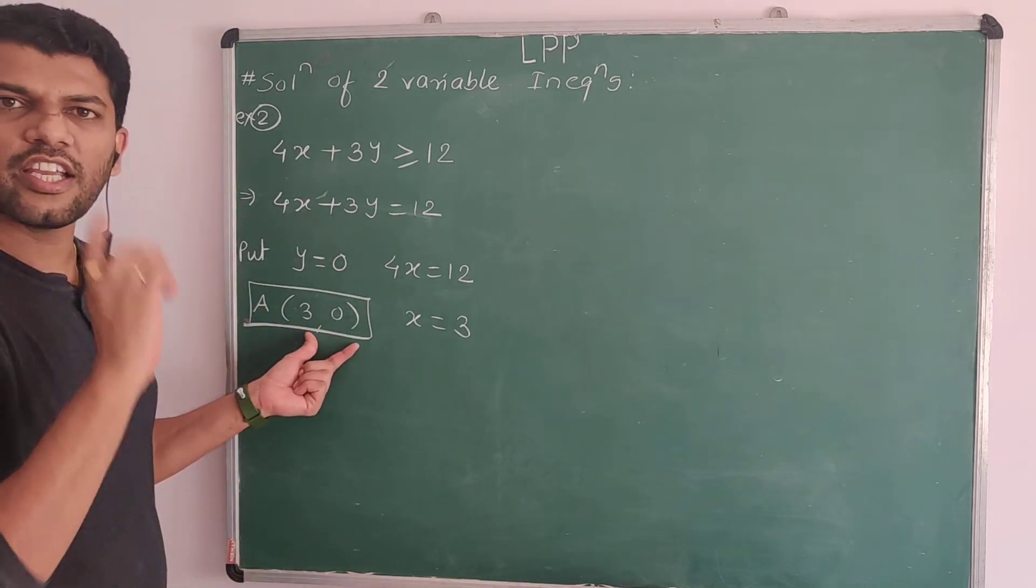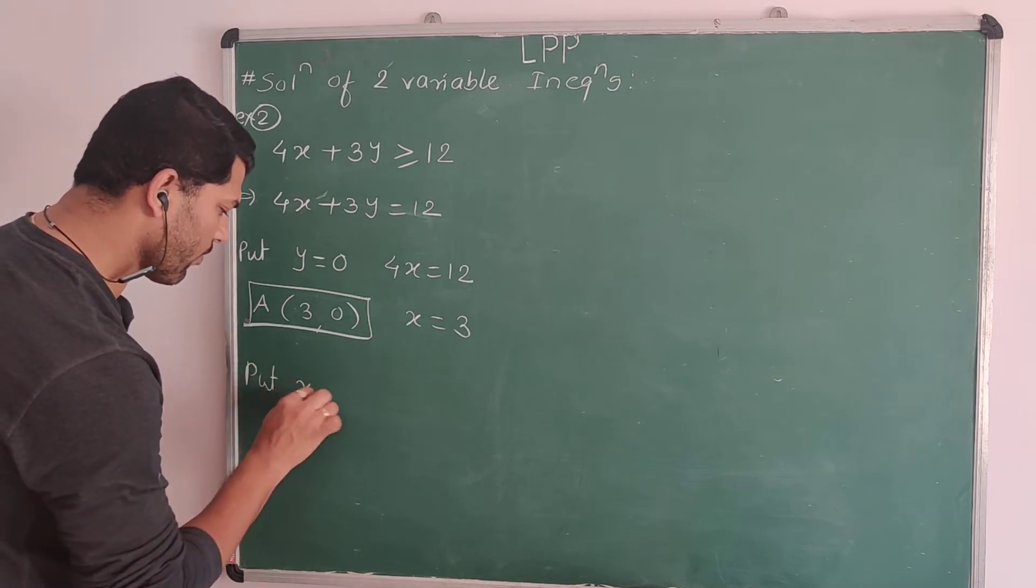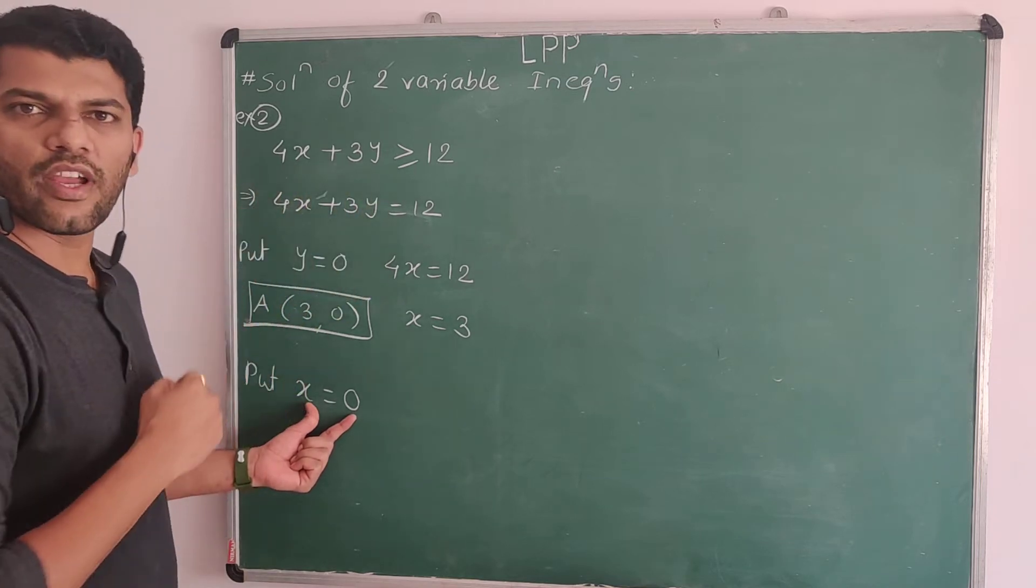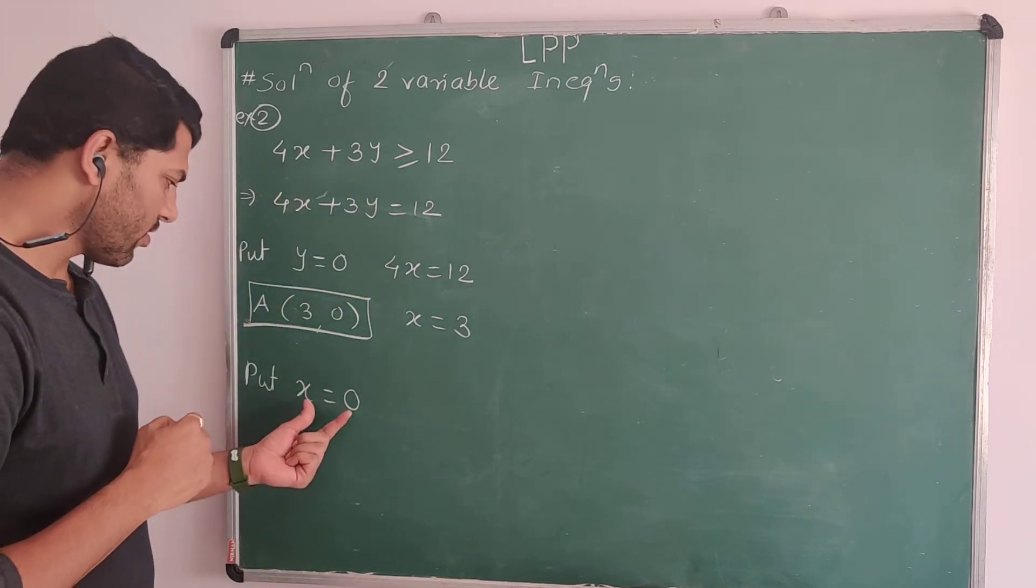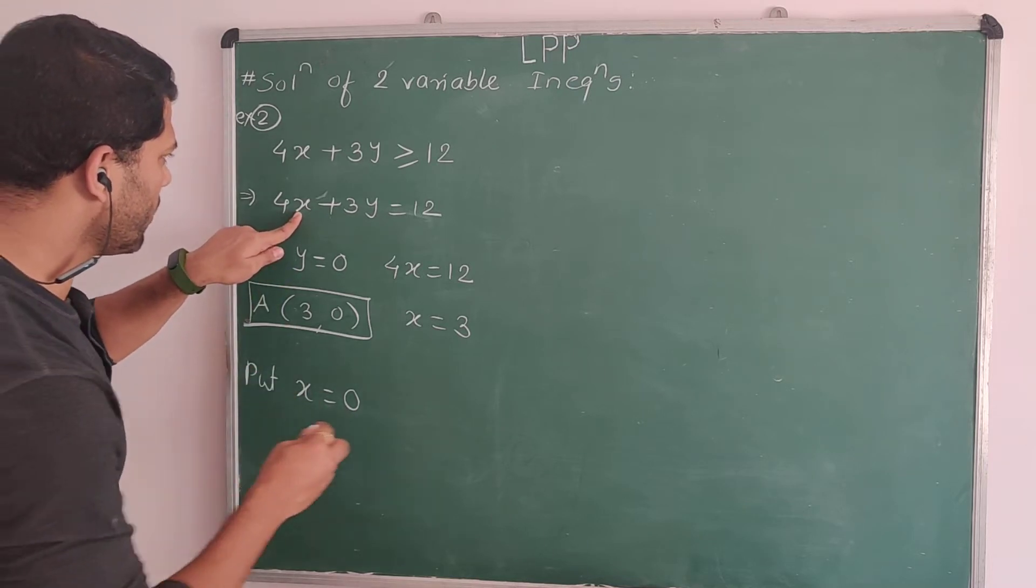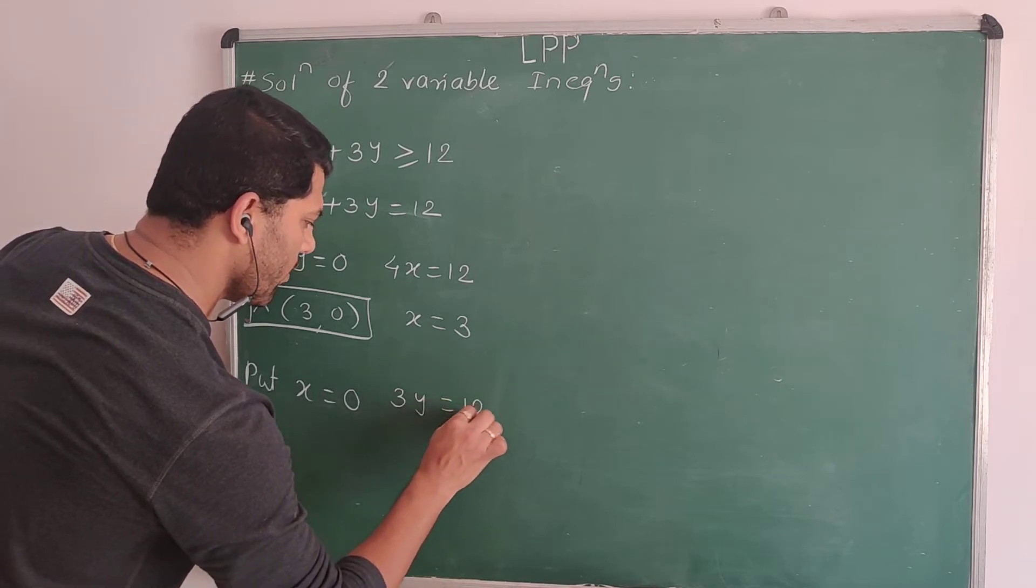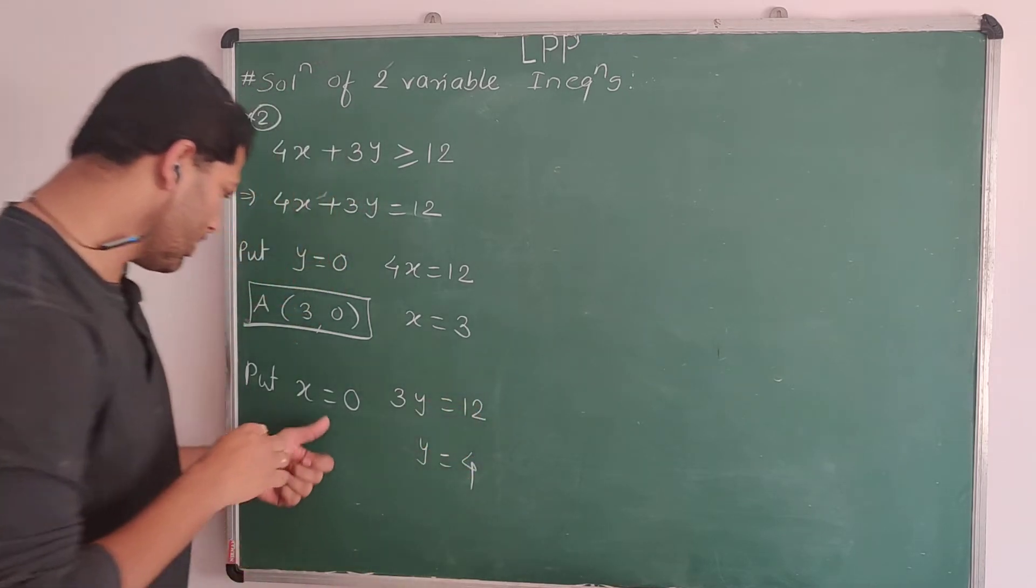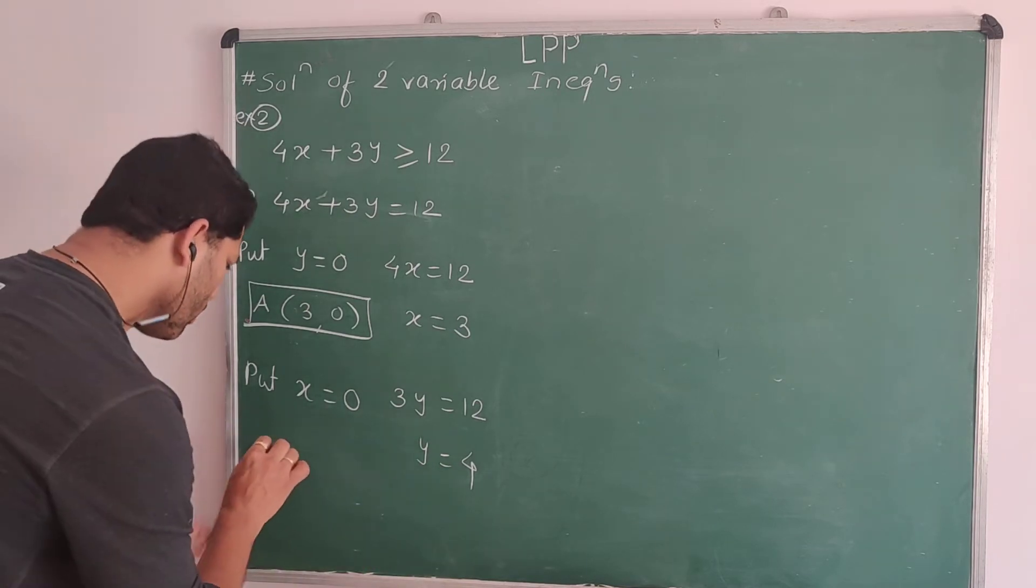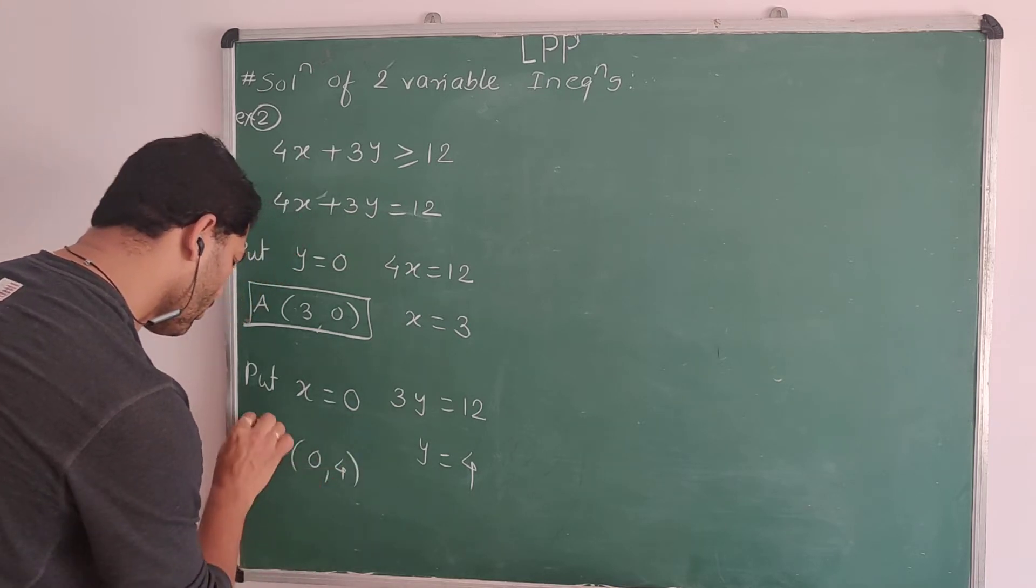Now, to find a second point, let's put x equal to 0. If you want to find a point on the y-axis, obviously x becomes 0. I am substituting x equal to 0 in this equality. This leads to 3y is equal to 12, so y is equal to 4. For x equal to 0, y value is 4. Therefore, the point on the y-axis is (0, 4).